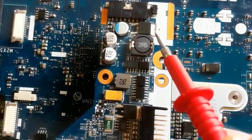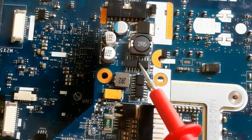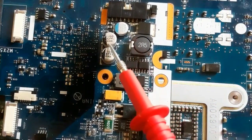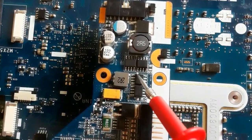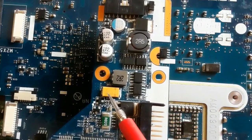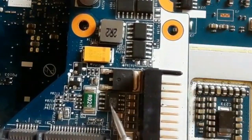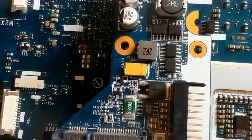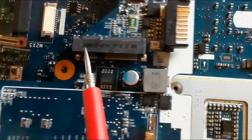We have the connector, MOSFET, inductor, MOSFETs, chemical capacitors. Here we have MOSFETs, as you can see, inductor, another capacitor, MOSFETs, and current sense resistor, as you can see.